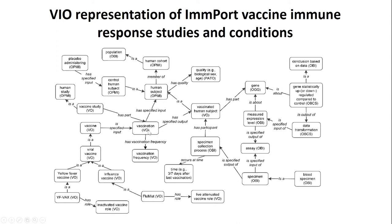The vaccine is given through vaccination. The vaccination can be at different frequencies, and you can have a different route — like intranasal or intramuscular. The vaccination is given to a human subject. The human subject has genes, and those genes can be up- or down-regulated, so you can do downstream analysis. The human can have different features — like sex, gender, age. And the human is part of a human cohort. So using ontological representation, we can bring all of these together.